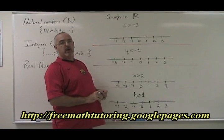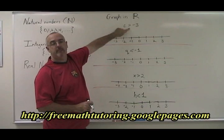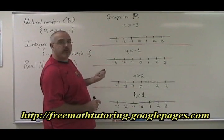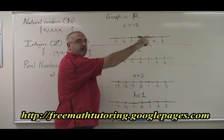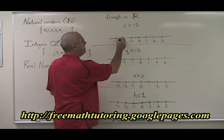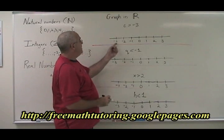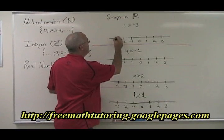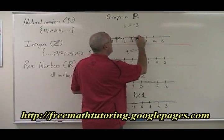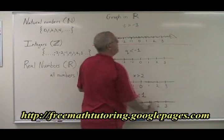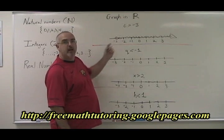Let's do a few more examples of graphing in real numbers on the number line. These examples don't have the or equal to line, and there is something new to do. C greater than negative 3. Negative 3 is not part of the answer. Negative 2 is part of the answer, negative 1, and forever. We know we're going to be shading over here, but how do we show all those decimals and fractions between negative 3 and negative 2? Those are part of the answer — they are greater than negative 3, but negative 3 is not. What we do is put an open circle on it but don't fill it in. That open circle means that negative 3 is not part of the answer, and then we shade from there to the right, going on forever. This tells the person who reads the graph that negative 3 is not part of the answer, but all the numbers in between are part of the answer.